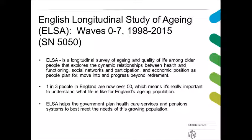The English Longitudinal Study of Aging is a longitudinal survey of aging and quality of life among older people that explores the dynamic relationships between health and functioning, social networks and participation, and economic position as people plan for, move into, and progress beyond retirement. We hold so far seven waves from 1998 to 2015, and as we speak, wave eight is underway. It started in May 2016 and will be conducted until June 2017. The study number in our data catalog is SN 5050.